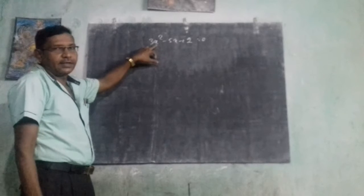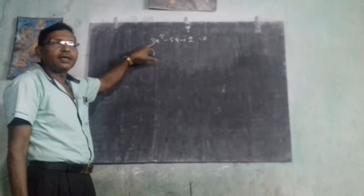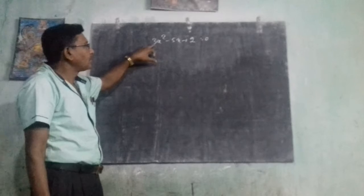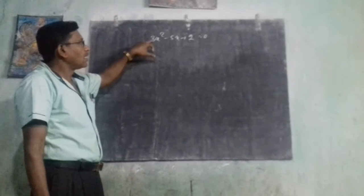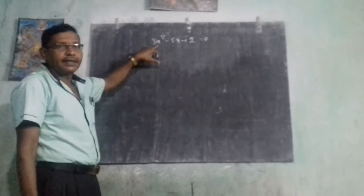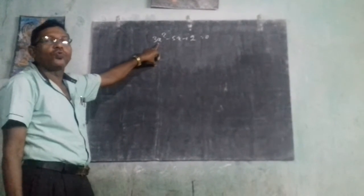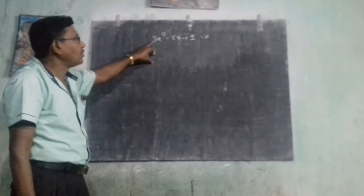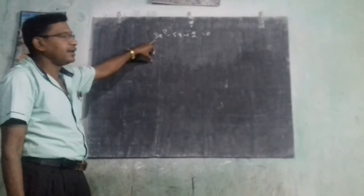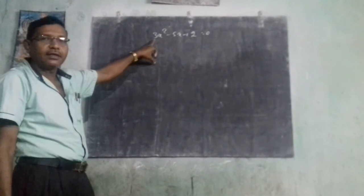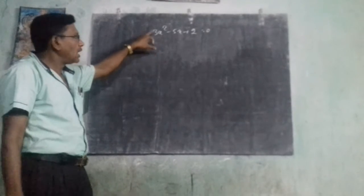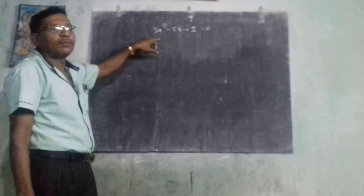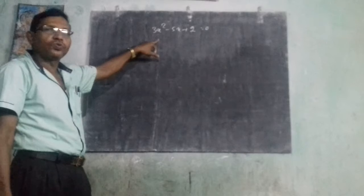3x squared is not a perfect square number, so first we convert it into a perfect square. How can we make it a square? If we multiply by 3 it becomes 9x squared, which is a perfect square. Or we can divide by 3, then it also becomes a perfect square.